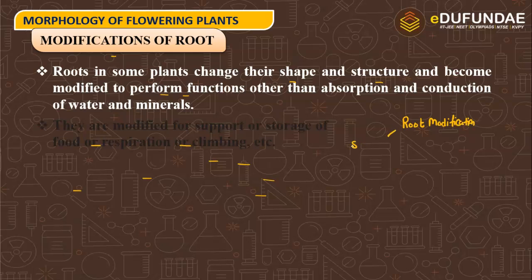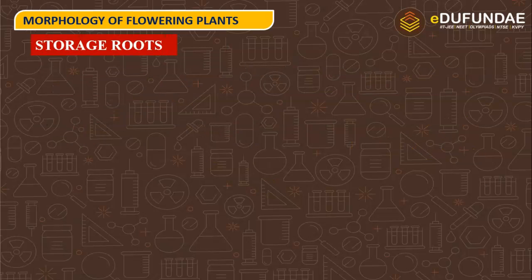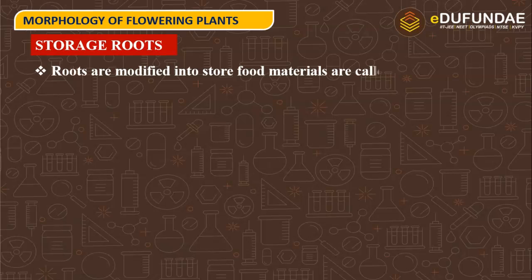The three main modifications are: for storage of food, for support, and for respiration. First, we will discuss about storage roots. Roots are modified to store food materials and are called storage roots. The roots become swollen due to storage of food.